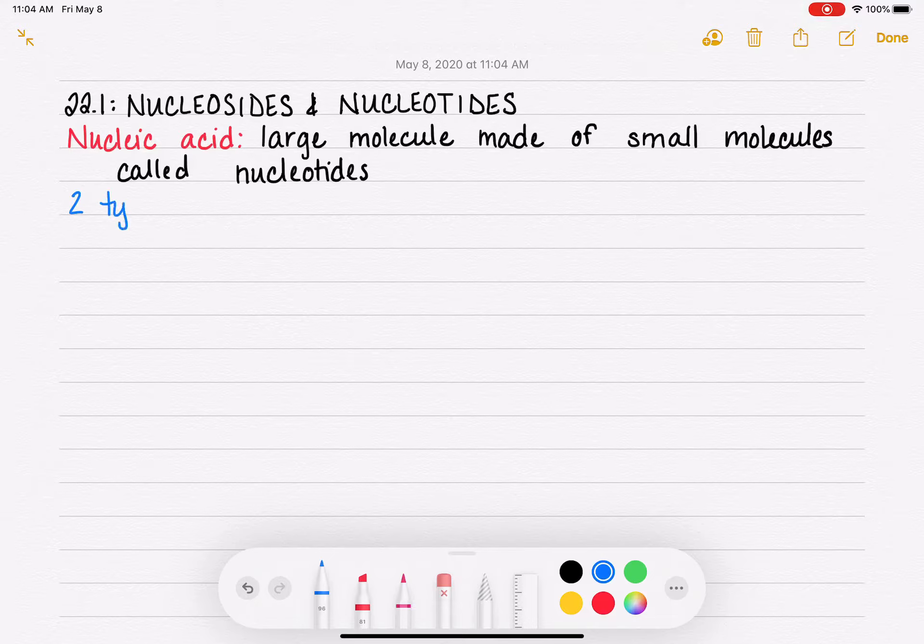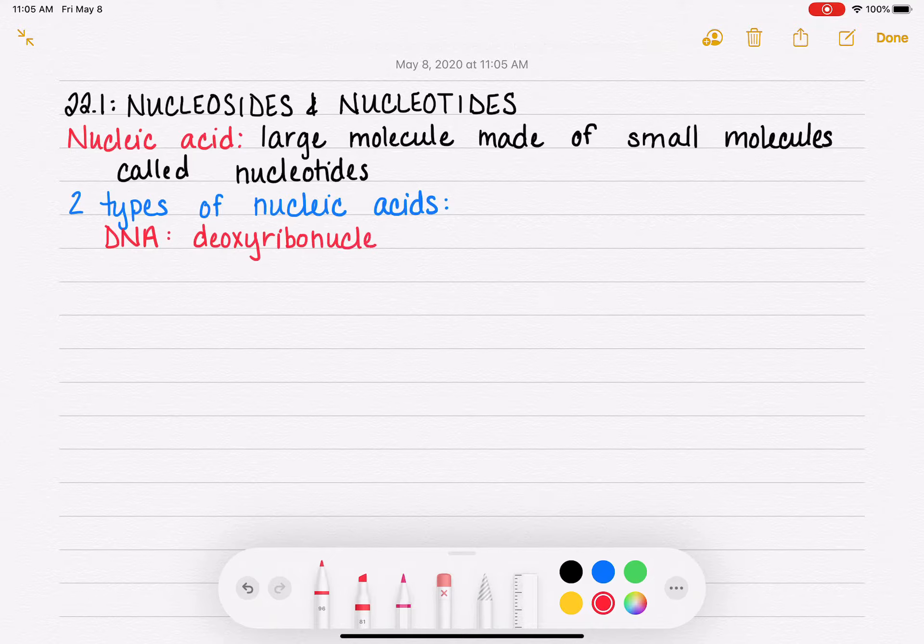There are two different types of nucleic acids. And those two types are, as you probably know, DNA and RNA. DNA, which stands for deoxyribonucleic acid. DNA contains millions of nucleotides.